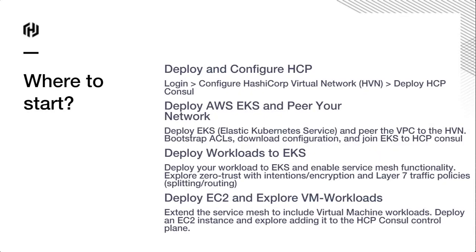Here are some of the things you can do to get started. You can deploy and configure an HCP environment — log in at cloud.hashicorp.com and create a cluster with a click-and-go button. You can connect that to EKS environments, which is what we're going to do today. We're going to bootstrap ACLs, download all our configurations, join EKS, and make sure everything's running. We're going to deploy an application and some workloads so you can see what's happening. You'll know it's all encrypted by TLS. If you're interested in how to deploy with virtual machines, I highly recommend checking out learn.hashicorp.com and our cloud platform guides.